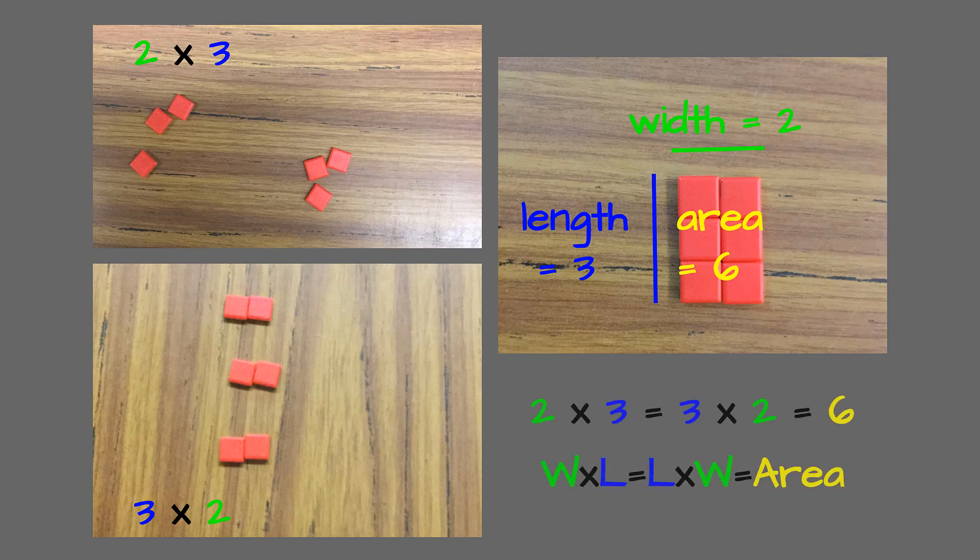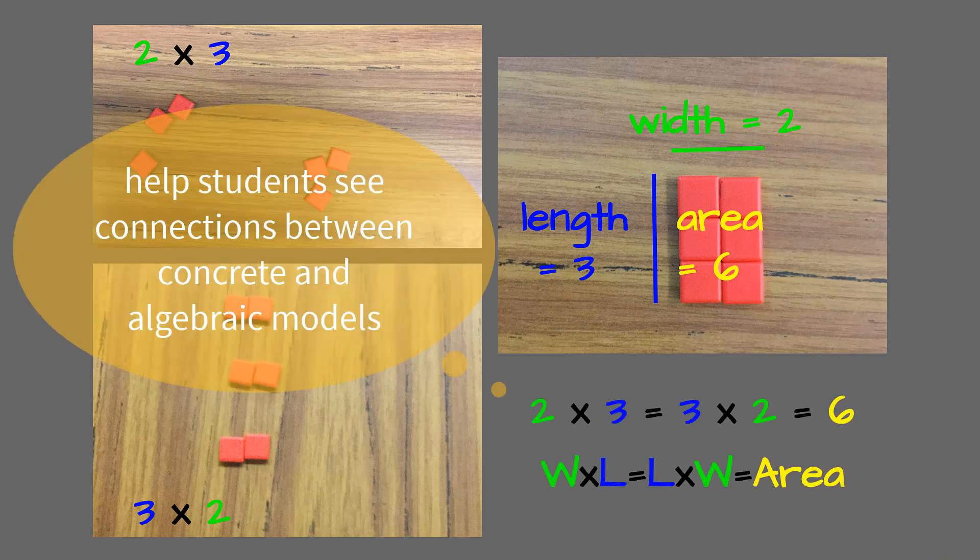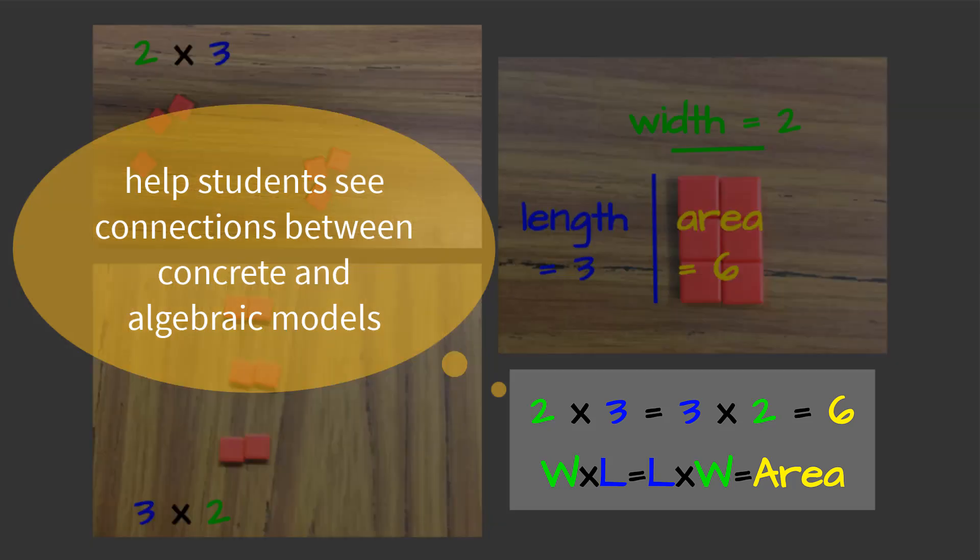And we want to connect the groups of model to the area model for students. So, we might consolidate that thinking like this, showing where we see the 2 and the 3 and the 6 in each, seeing that area of a rectangle is length times width and connecting that clearly for students, and also showing that it could be length times width or width times length, using that commutative property that students discovered or reactivated their knowledge of.